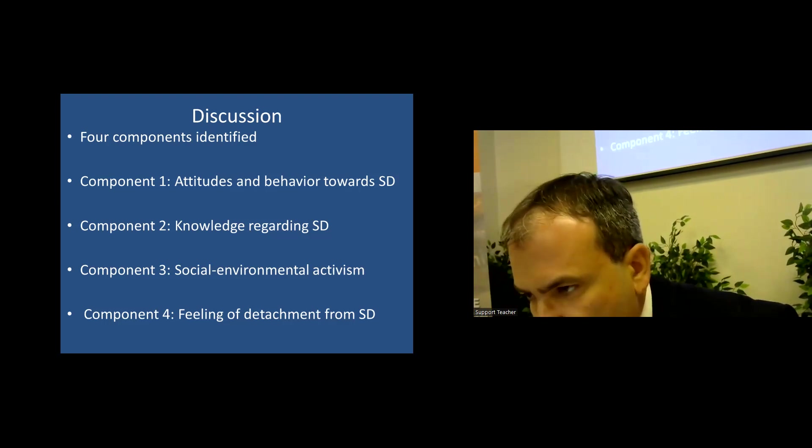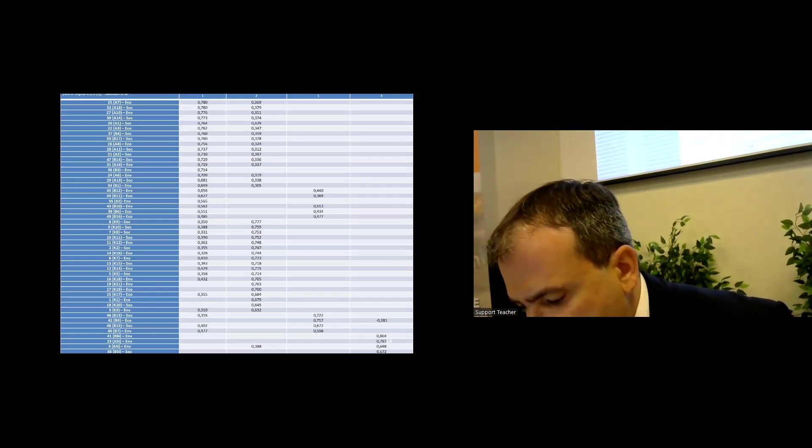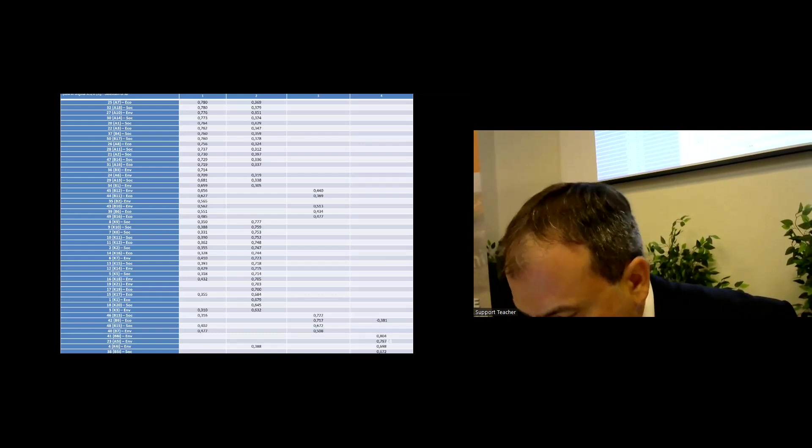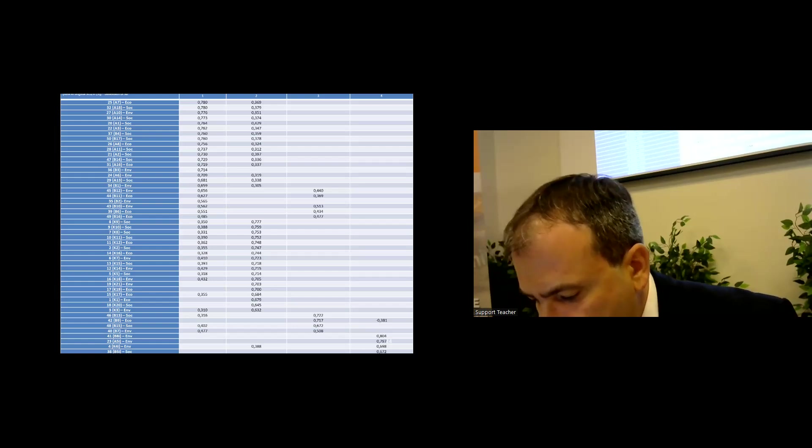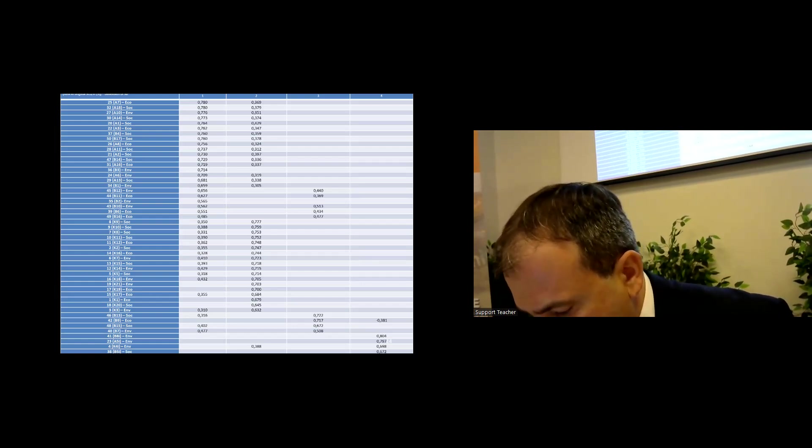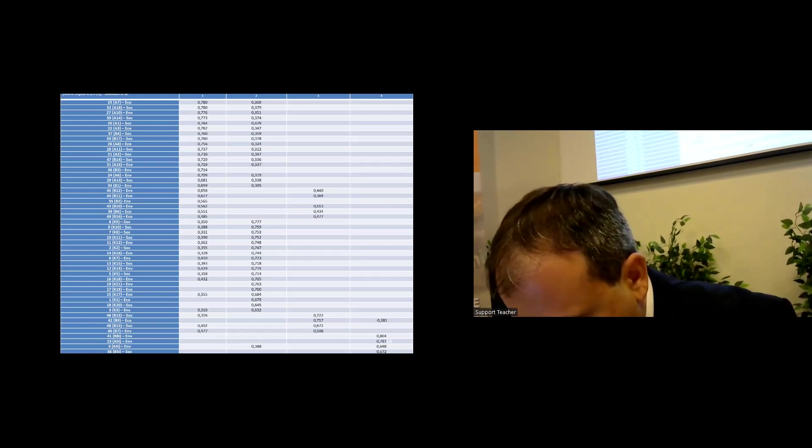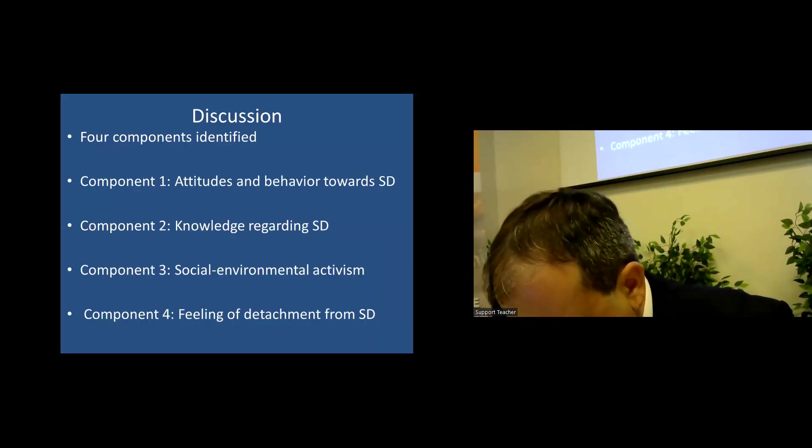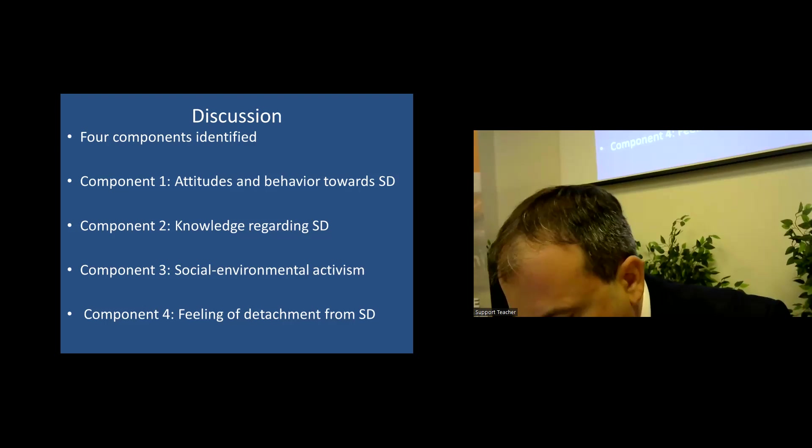Component two possesses the second highest eigenvalue and accounts for around 9% of the total variance. It consists of 18 items which all refer to the construct of knowingness, a term which is adopted in the publication of the original instrument instead of the term knowledge. All three dimensions of sustainable development are represented: environment, society, and economy. The knowingness is used to express what the respondents recognize as important in order to accomplish sustainable development and has both a cognitive and affective component. In this work, it was decided to adopt the most widely used term knowledge regarding sustainable development as a title for this factor.